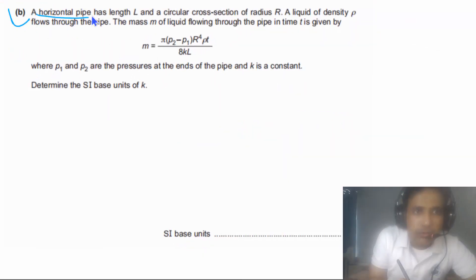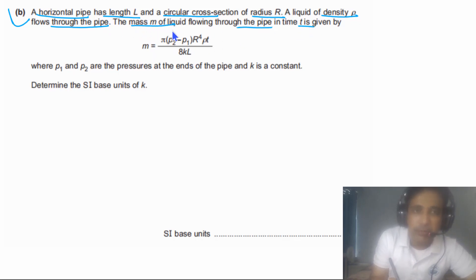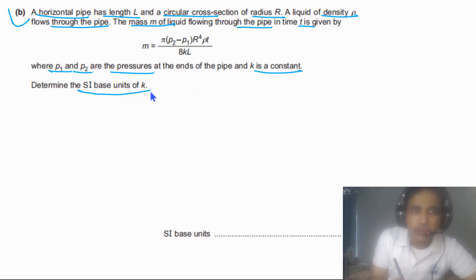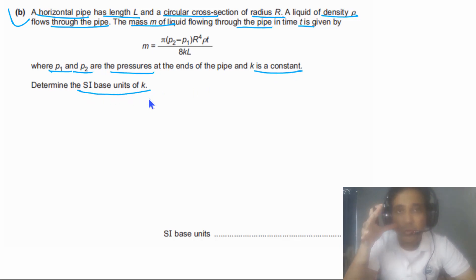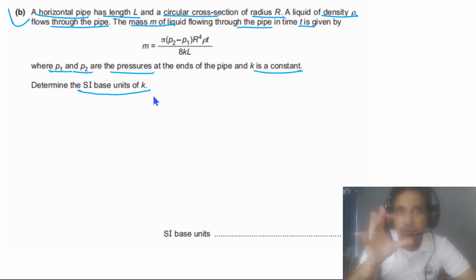Part B says a horizontal pipe has length L and a circular cross-section of radius R. A liquid of density rho flows through the pipe. The mass m of the liquid flowing through the pipe in time t is given by an equation, where P1 and P2 are the pressures at the ends of the pipe and K is a constant. We need to determine the SI base units of K. This is a typical type of exam question — most of the time they will ask you to determine SI base units for any quantity, and in the SI base system we have seven SI base units and seven SI base quantities.